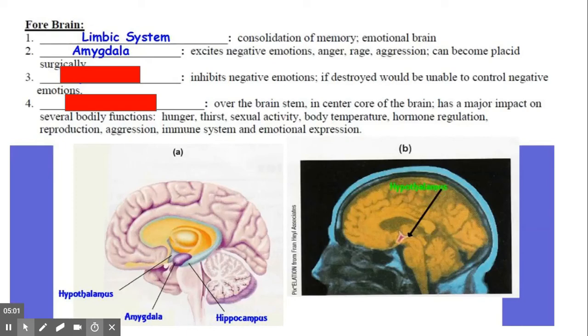The third item here is our septal area. This inhibits negative emotions. If destroyed, you would be unable to control negative emotions, so it would allow you to cry and be emotionally overcome.